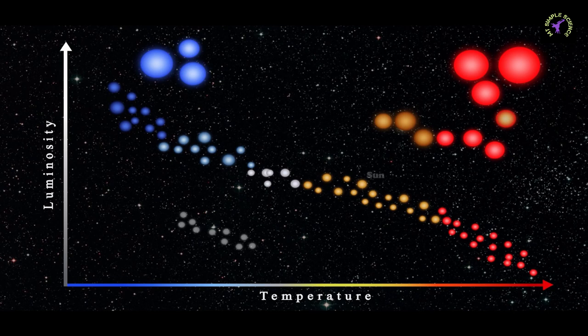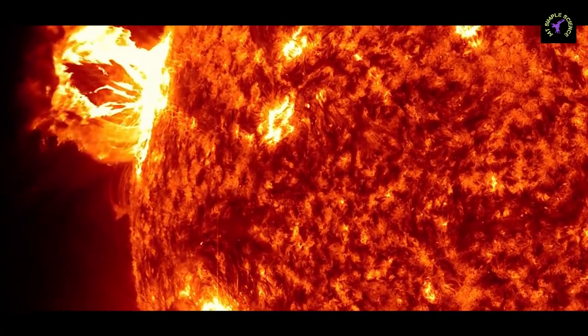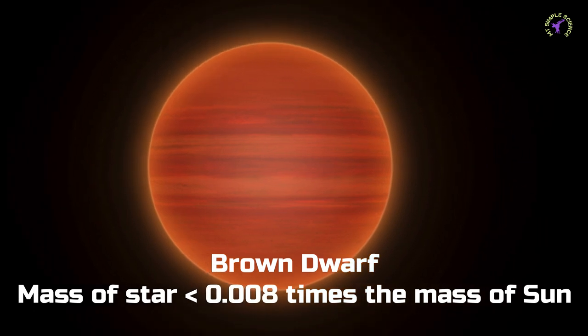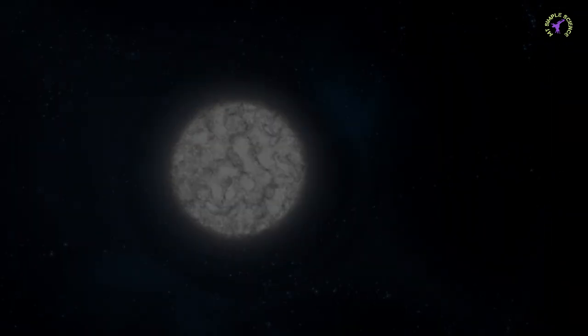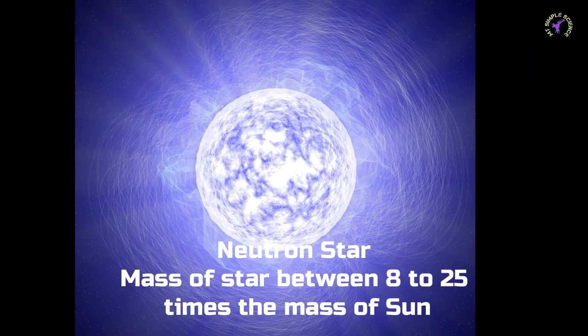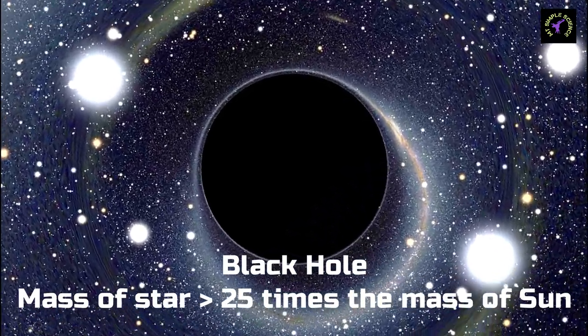In fact, not every star becomes a red supergiant. What will be its future after hydrogen fuel ends depends on the mass of the star. If the mass of the star is less than 0.008 times the mass of the Sun, then it remains a brown dwarf. If the mass of the star is between 0.008 and 8 times the mass of the Sun, then it becomes a white dwarf. If the mass of the star is between 8 and 25 times the mass of the Sun, then it becomes a black hole.